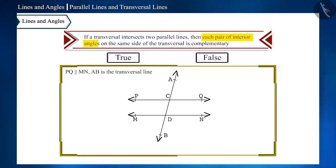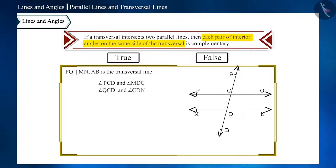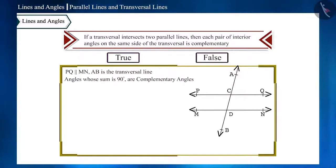Interior angles formed on the same side of transversal, that is angle PCD, angle MDC and angle QCD, angle CDN are complementary angles. We know that angles whose sum is 90 degrees are complementary angles. Is the sum of these angles 90 degrees? From the figure, we know that their sum is more than 90 degrees.